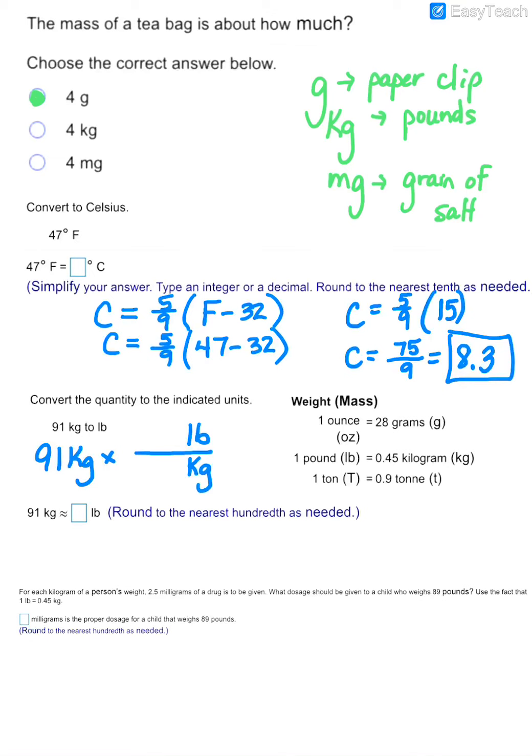And so you'll notice in our table here, they give us that relationship. So we see that 0.45 kilograms is the same as one pound. And so notice what happens here with that particular unit fraction is your kilograms will cancel and your answer that you'll be left with is pounds. And then you just go ahead and you're going to multiply 91 times 1, and that gives you 91. And then you're going to divide it by 0.45. And again, just on a calculator, just dividing that out.